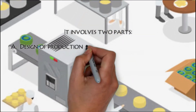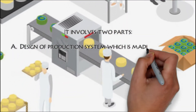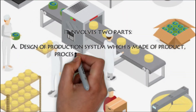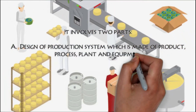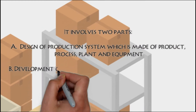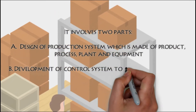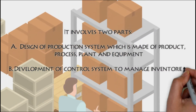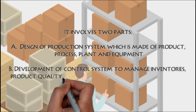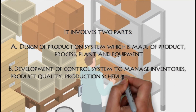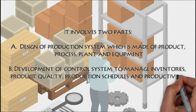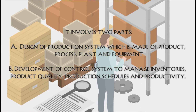It involves two parts: A) design of production system, which is made of product, process, plant and equipment; and B) development of a control system to manage inventories, product quality, production schedules, and productivity.